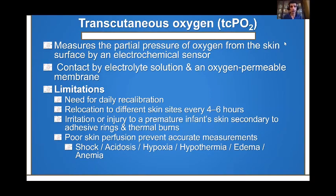Another type of non-invasive blood gas monitoring is transcutaneous oxygen monitoring. Unlike pulse oximetry, it does not compare saturated to unsaturated hemoglobin — it measures the actual partial pressure of oxygen. It uses an electrolyte solution and a membrane in surface contact with the skin, and therefore requires frequent calibration, approximately every four to eight hours, with a site change every 48 hours. Because it uses contact and electrolyte, it causes skin irritation and can cause thermal burns. It is also affected by poor perfusion from shock, acidosis, hypoxia, hypothermia, edema, or anemia.